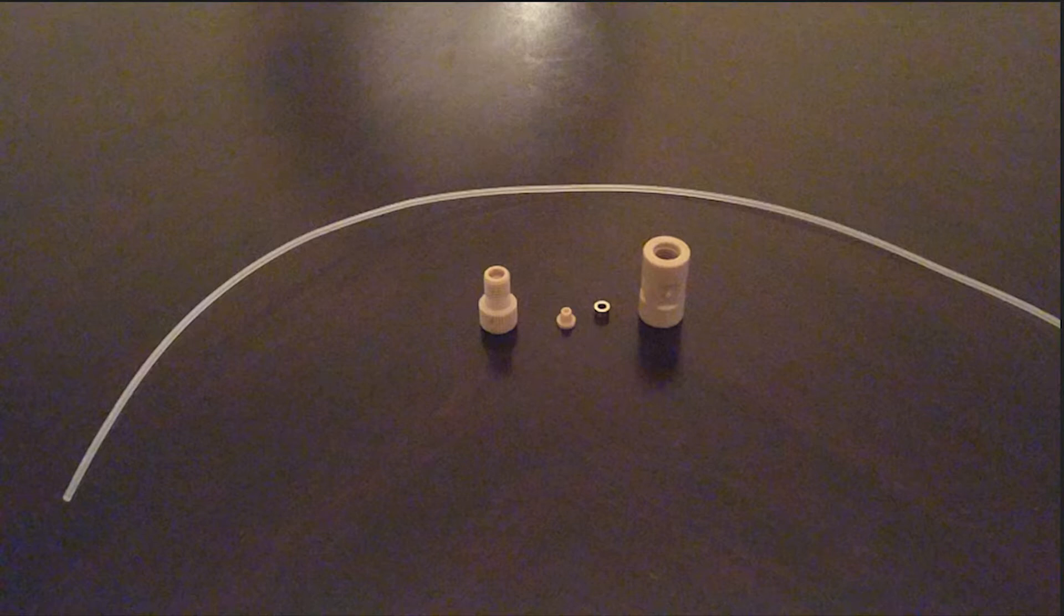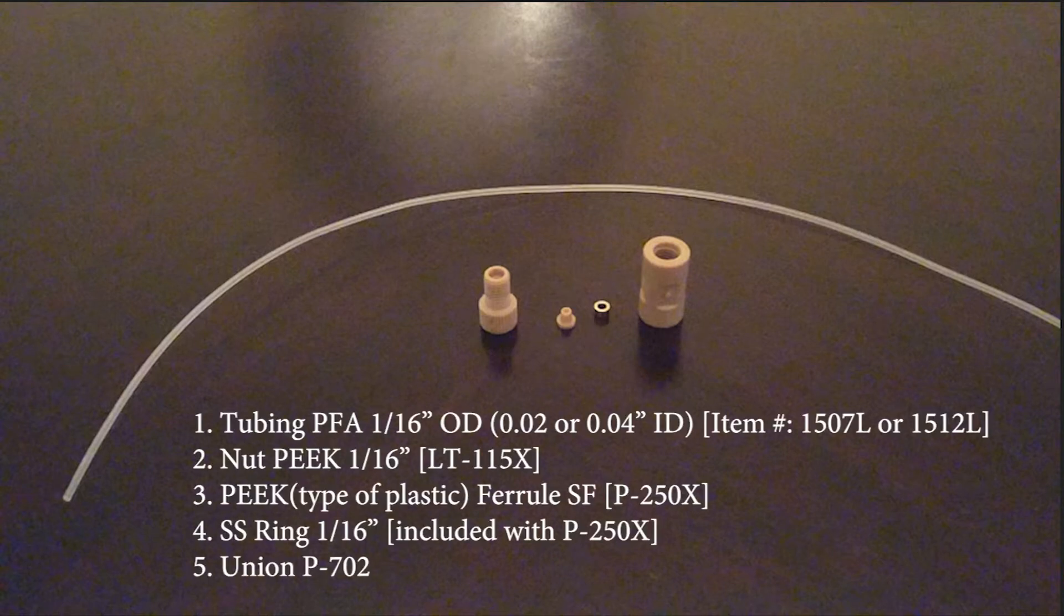For the first section of the video, we'll be assembling the tubing connector. These are the following components: tubing PFA 1/16th OD, nut PEEK 1/16th, PEEK ferrule SF, SS ring 1/16th, and union P-702.